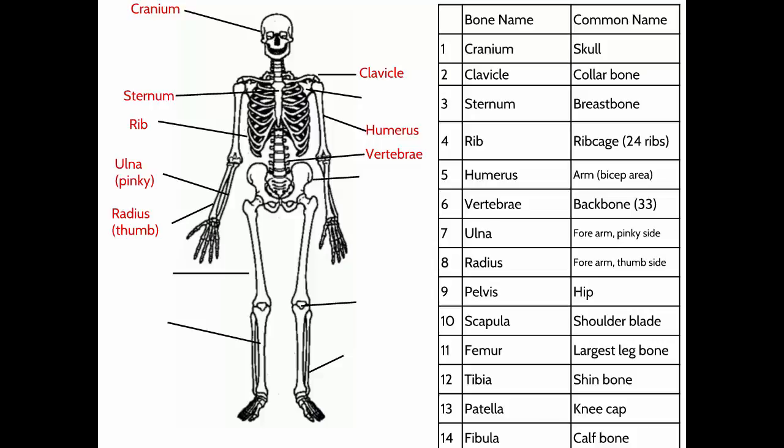The ulna and radius are often mixed up. The ulna is on the pinky side of your arm; the radius — the thicker one — is on the thumb side. A helpful reminder: your thumb can rotate in a full circle, and a circle has a radius, so the thumb-side bone is the radius. If you hold your forearm and twist your wrist, you can feel the radius rotate around the ulna.